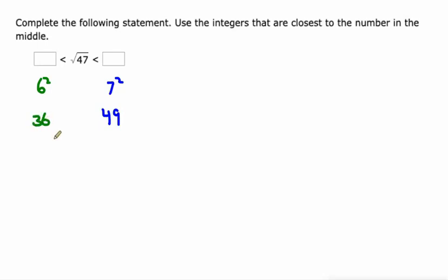All right, so use the integers that this is between. So the square root of 47 is right smack dab between 6 and 7. Well, it's not like it's in the middle, but it's a little closer to 7. But it's between 6 and 7.